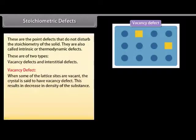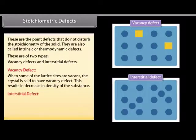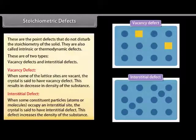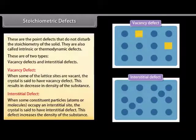Interstitial defect: when some constituent particles — atoms or molecules — occupy an interstitial site, the crystal is said to have interstitial defect. This defect increases the density of the substance.